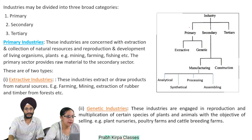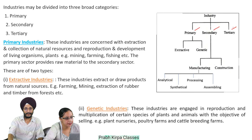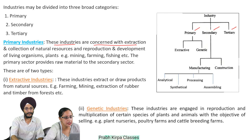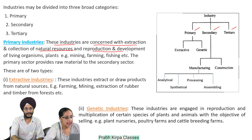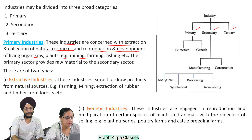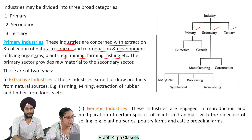Industries may be divided into three broad categories: 1. Primary, 2. Secondary, 3. Tertiary. Primary industries are concerned with extraction and collection of natural resources and reproduction and development of living organisms, plants, e.g., mining, farming, fishing, etc. The primary sector provides raw material to the secondary sector. These are of two types: first, extractive industries, which extract or draw products from natural sources, for example farming, mining, extraction of rubber and timber from forests, etc.